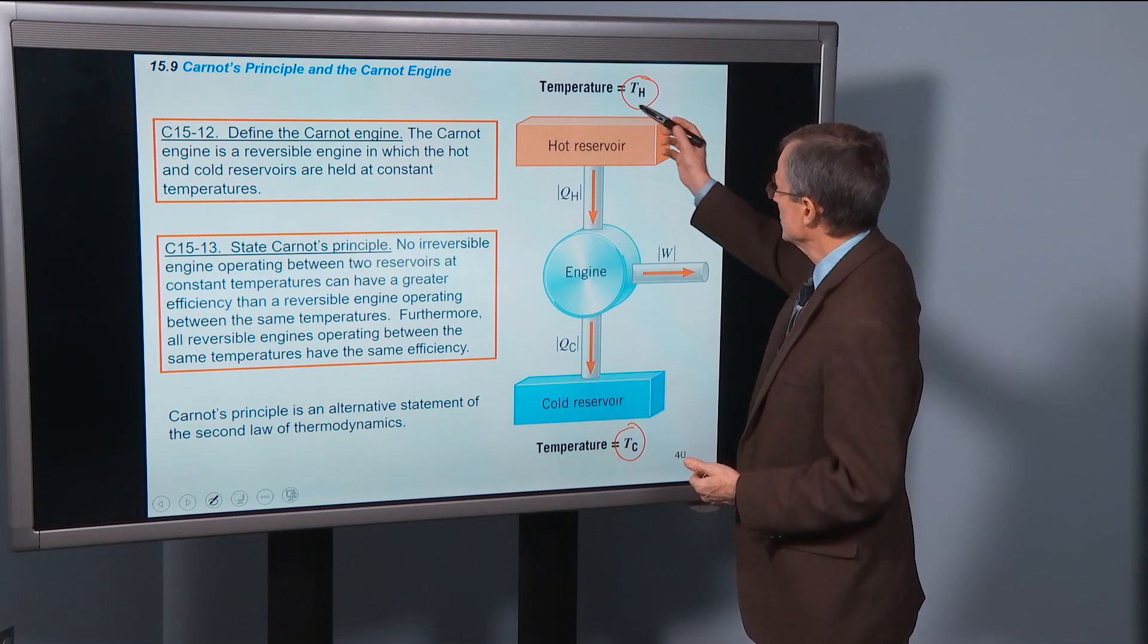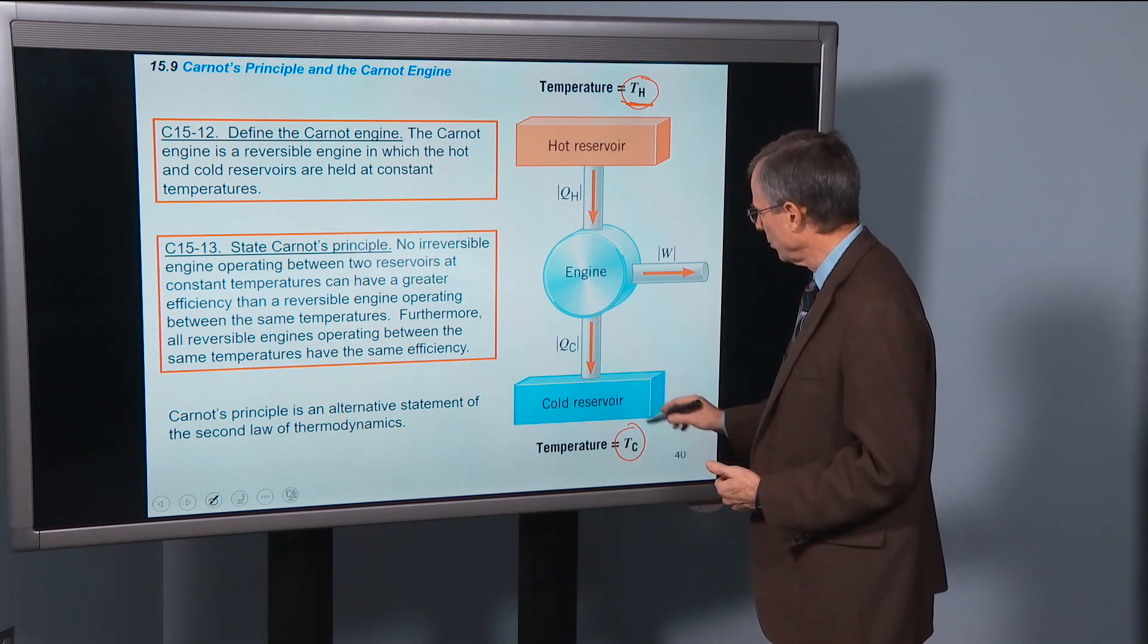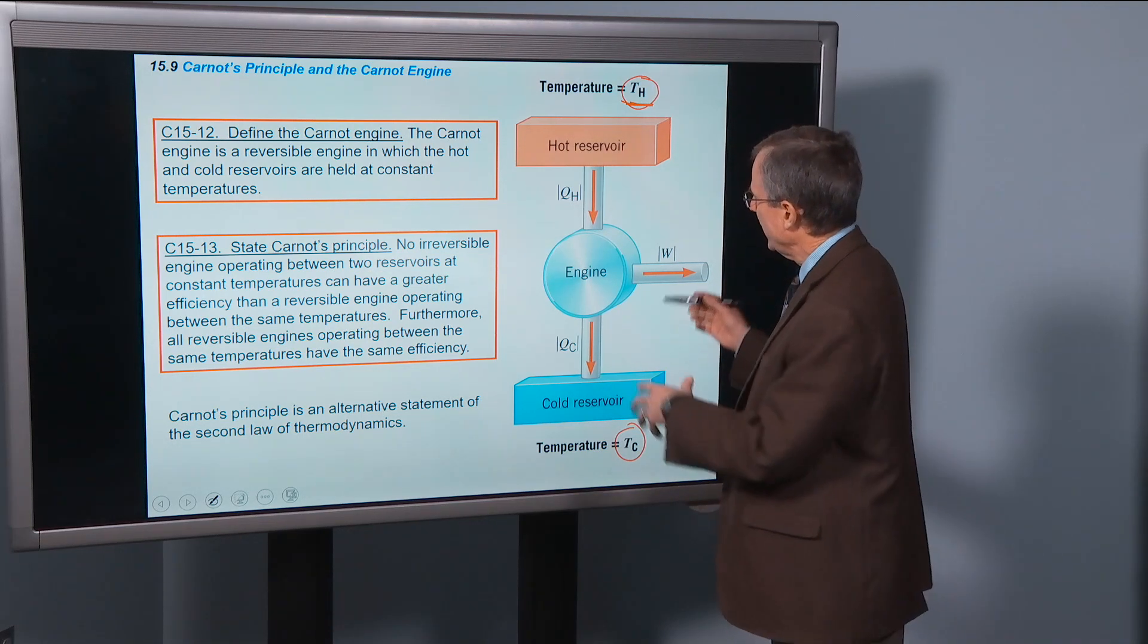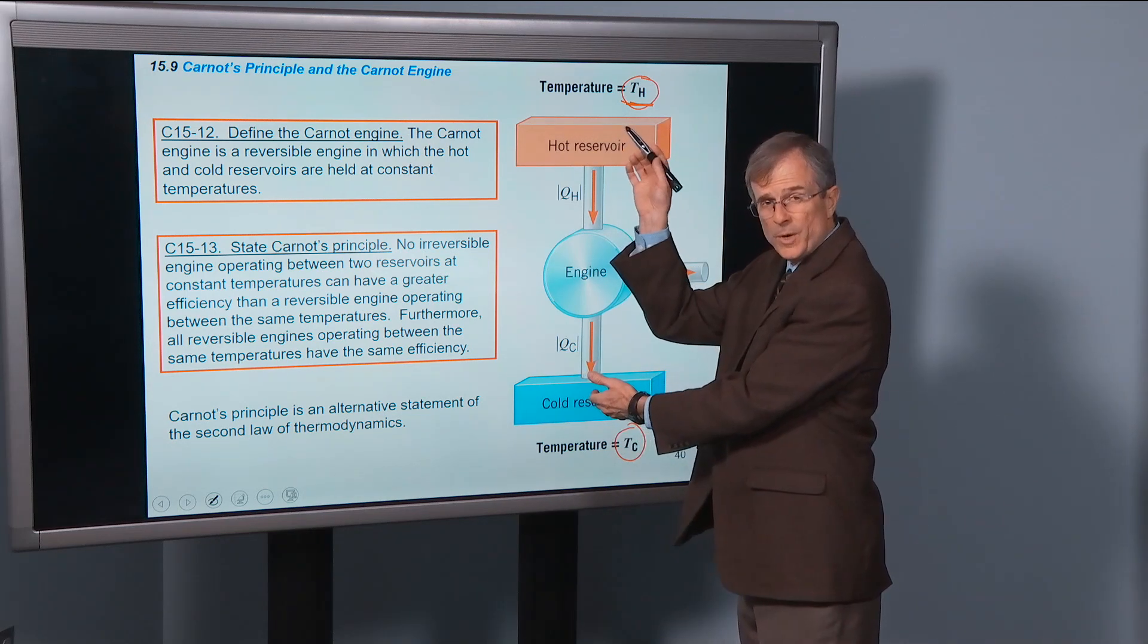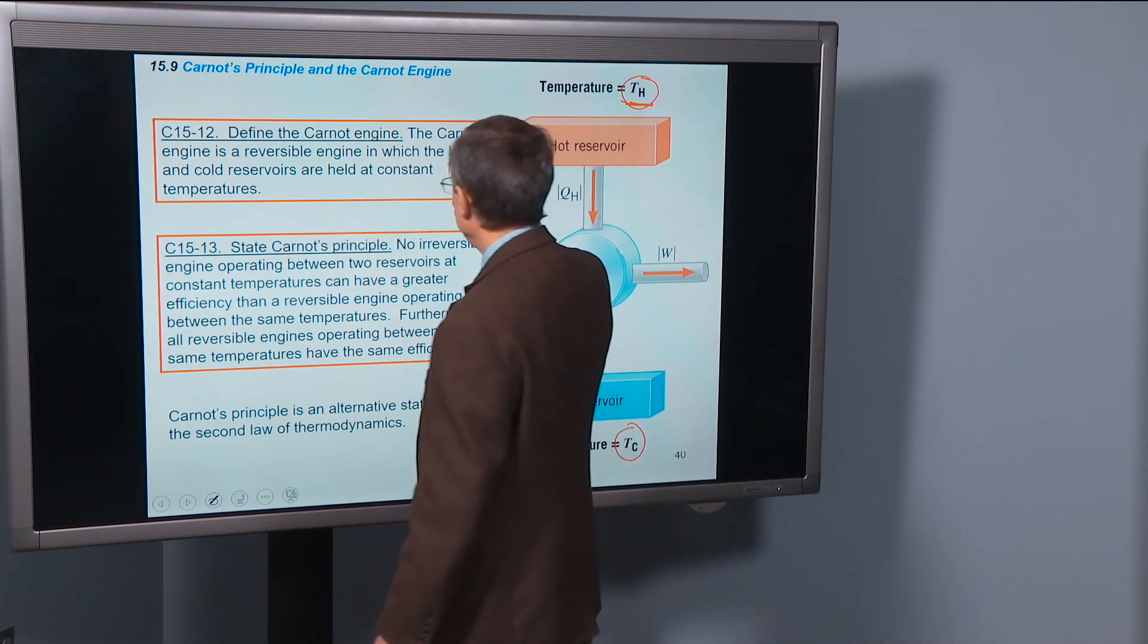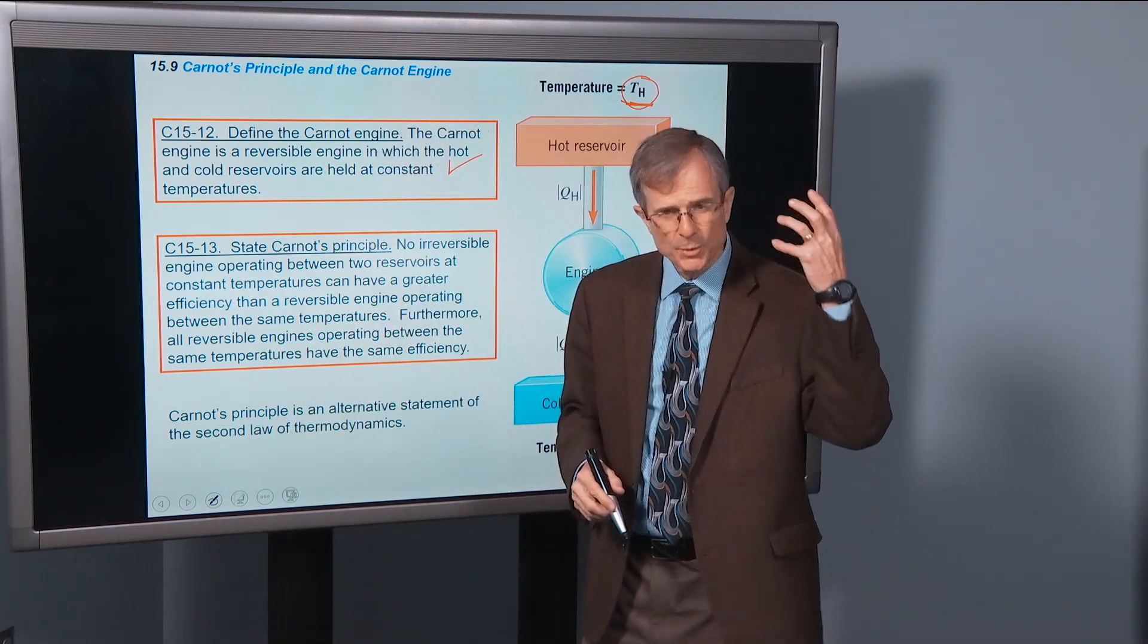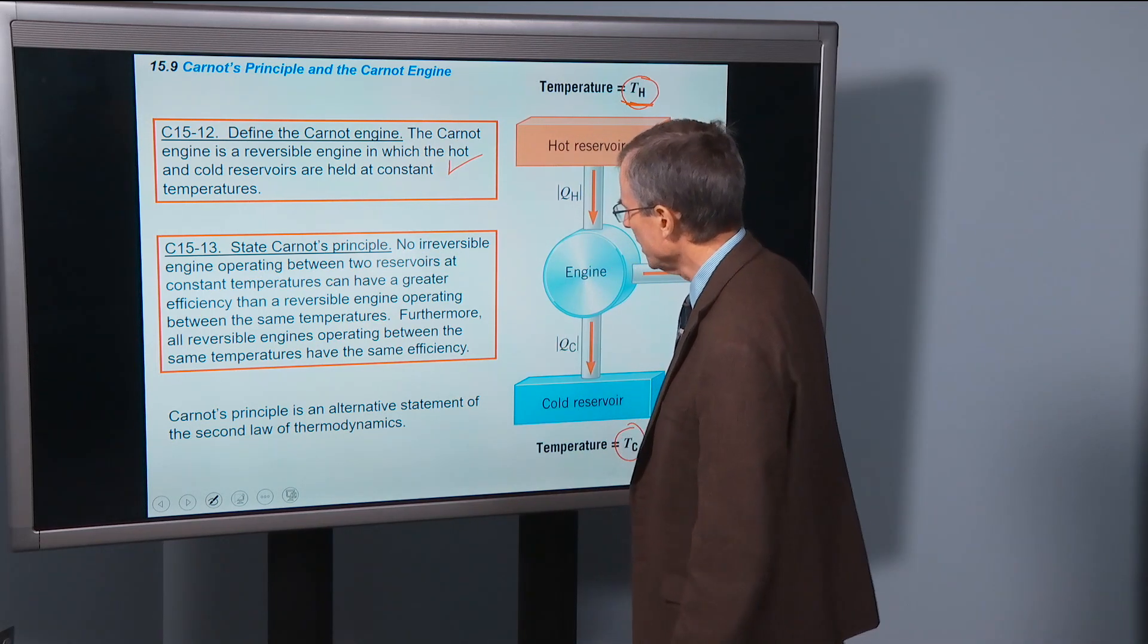The hot reservoir is maintained at some constant temperature, and the cold reservoir is maintained at some lower constant temperature. And as the work is done and the heat is exchanged, these reservoirs stay at the same temperatures. So that's what we mean by a Carnot engine. If you just want to remember, it's a heat engine with constant temperature reservoirs.